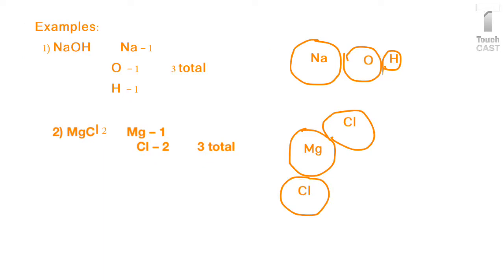So here are a couple of examples. The first example is NaOH, or sodium hydroxide. I've drawn the picture out to the side to represent one atom of sodium, one atom of oxygen, and one atom of hydrogen.